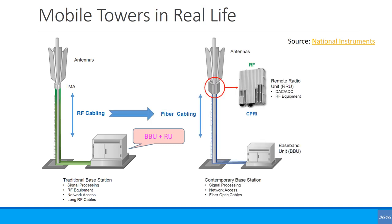Nowadays there's a slightly different approach. Rather than the traditional base station, the radio unit is taken out of the cabinet and connected on top of the mast. This is called the remote radio unit (RRU) or remote radio head (RRH) — different terms for the same thing. The RRU contains the analog-to-digital converter, digital-to-analog converter, and the RF equipment.